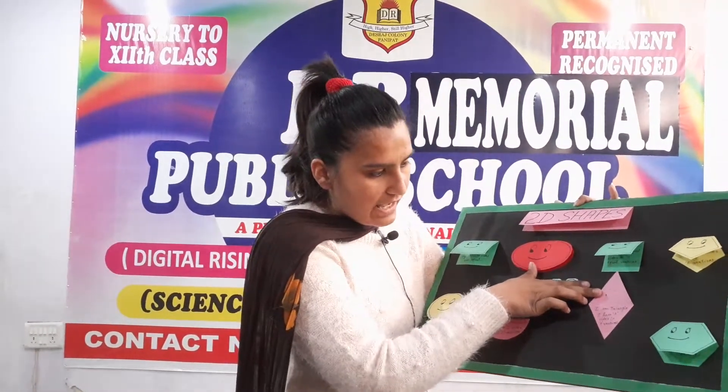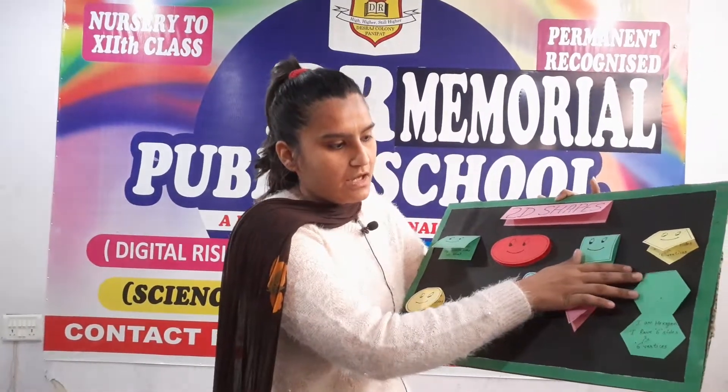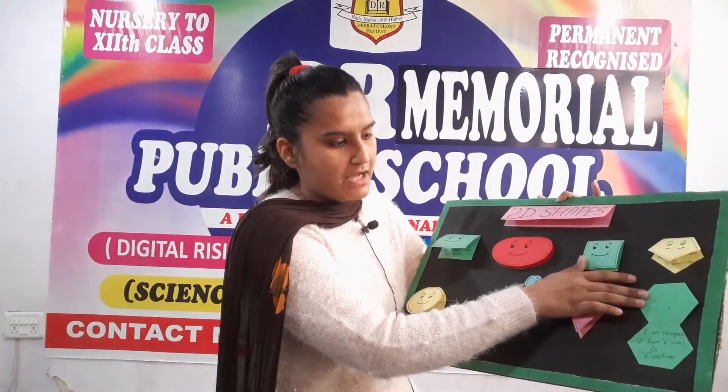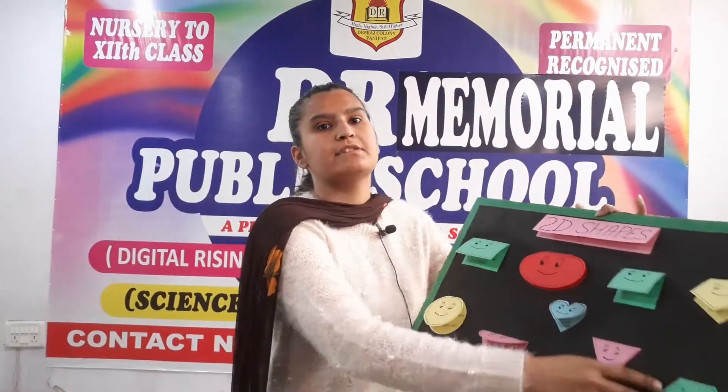The triangle. I am triangle. I have 3 sides and 3 vertices. Then hexagon. I am hexagon. I have 6 sides and 6 vertices.